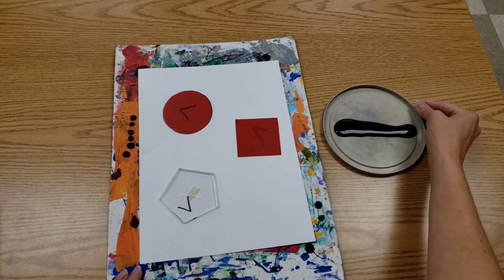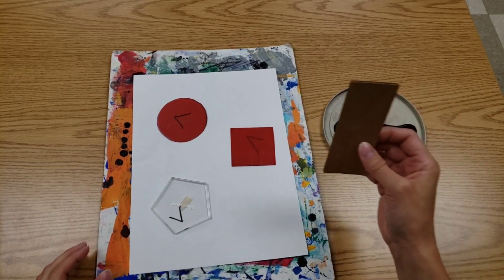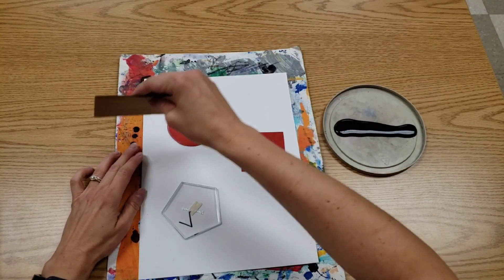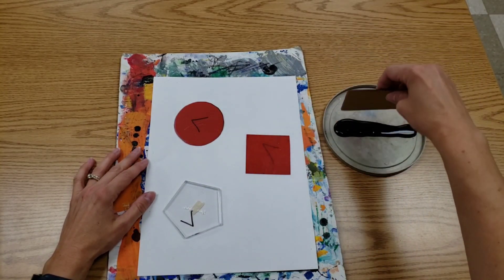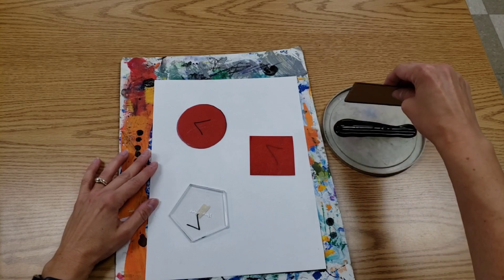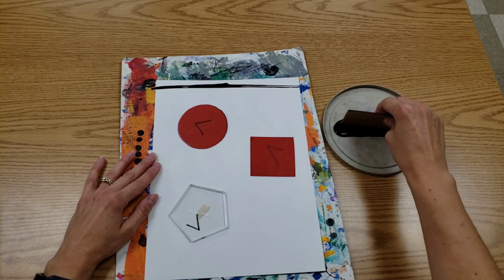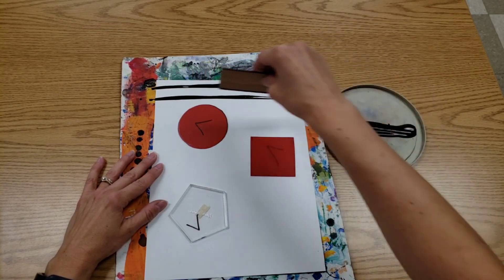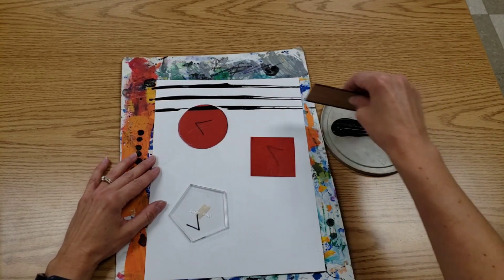Then we have paint and some cardboard. We're using this to make lines. Long lines that go all the way across your page. So I'll take the cardboard, press in the paint, and then make a long line all the way across. And here I'm making the long line over the top of that shape.